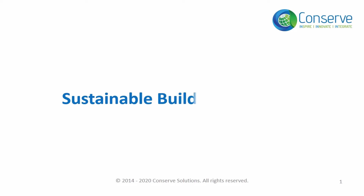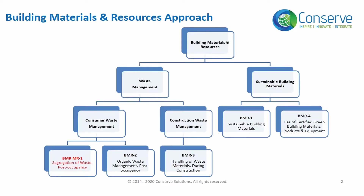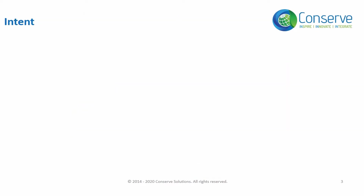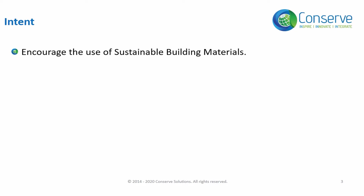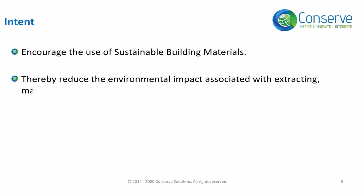In the next part we will discuss Credit 1 - Sustainable Building Materials and Credit 4 - Use of Certified Green Building Materials, Products and Equipment. They both are associated with sustainable building materials. The intent or objective of both credits is to encourage the use of sustainable building materials and thereby reduce the environmental impact associated with extracting, manufacturing, and transporting building materials.